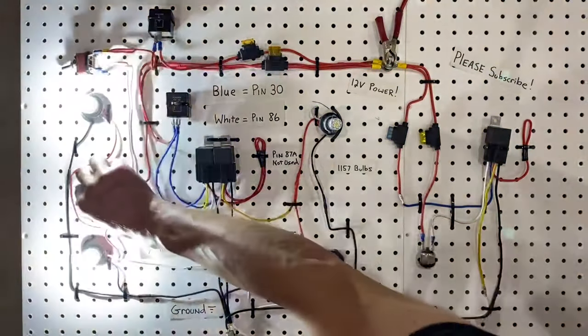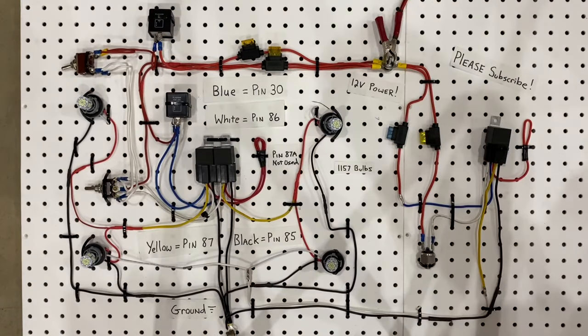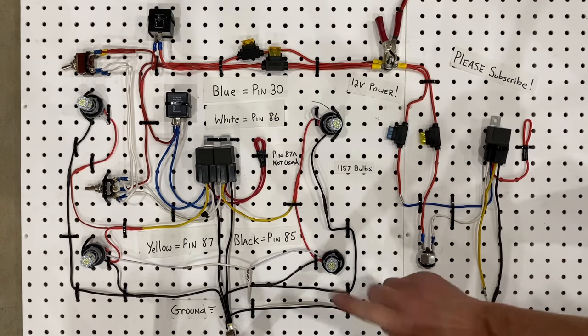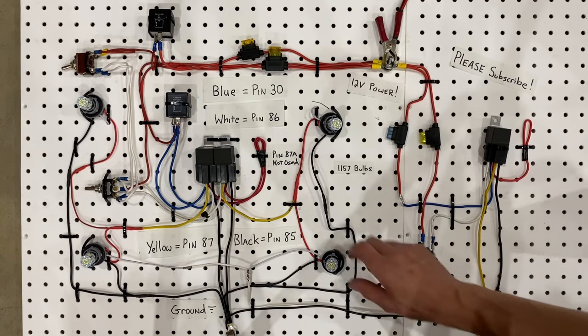Very nice. I think what we should try next though is some normal 1157 bulbs for the back brake lights, so let's do that.